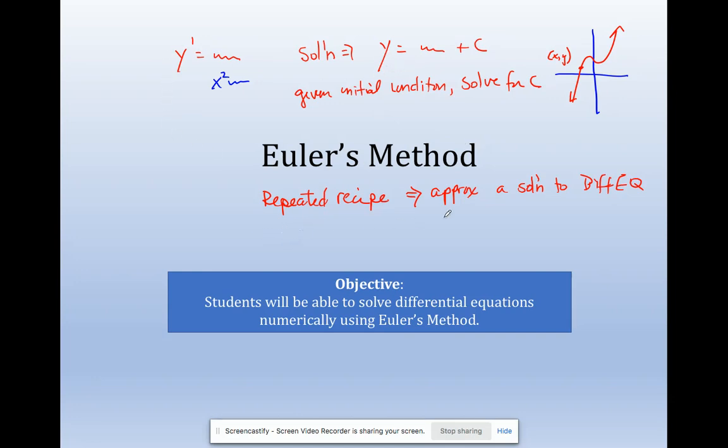Euler's method is using the given derivative and an initial condition or a point on the original curve. Get me some points that are close. So if my red graph is actually my solution, Euler's method will come up with this point, they'll share this point.